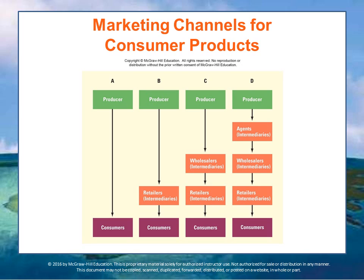When thinking about pricing, here's a heuristic: it roughly doubles at each step. The producer sells to the wholesaler, who doubles the price and sells to the retailer, who doubles it again and sells to the consumer. It's not that simple, but you can see how value gets divided. Many people launching a product assume the producer gets all the profit, but everyone in the channel has to make money.